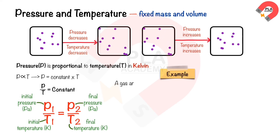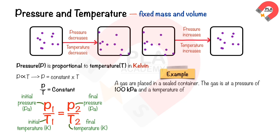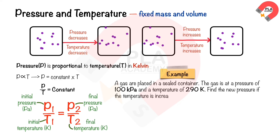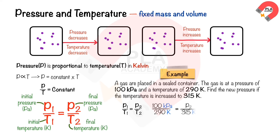For example, a gas is placed in a sealed container at a pressure of 100 kilopascals and a temperature of 290 Kelvin. Find the new pressure if the temperature is increased to 315 Kelvin. Substituting P1 equals 100 kPa, T1 equals 290 Kelvin, and T2 equals 315 Kelvin into the equation and rearranging to calculate P2, the result is 109 kilopascals.